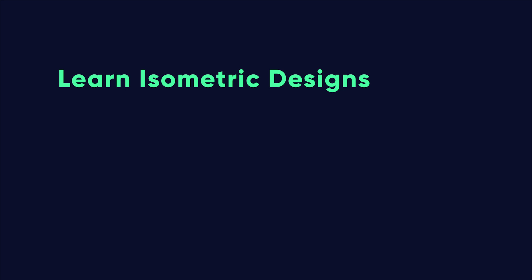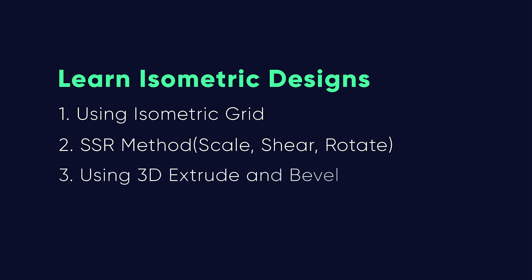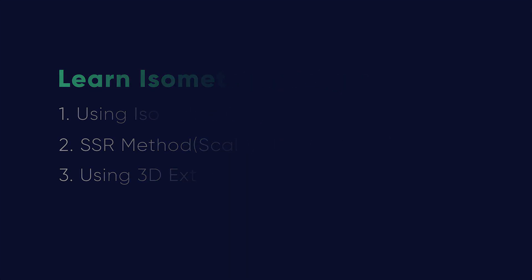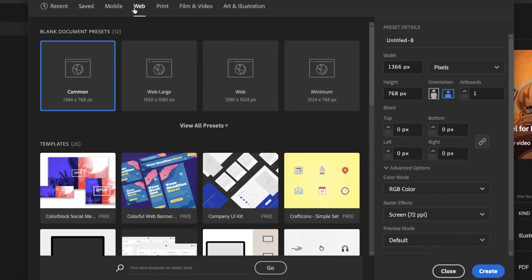There are three methods to create isometric design in Illustrator: using isometric grid, using the SSR method — that is Scale, Shear and Rotate — and using the 3D Extrude and Bevel method. You can use any one of them. After experimenting a couple of times I have come up with some numbers for width, height and other dimensions. You can change them and play with them as per your convenience.